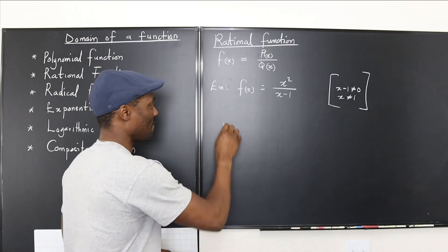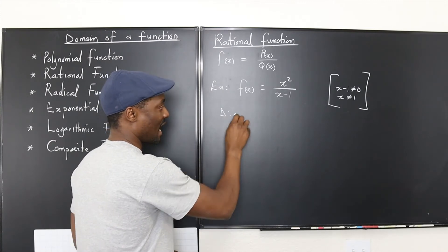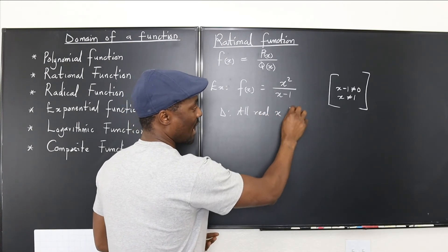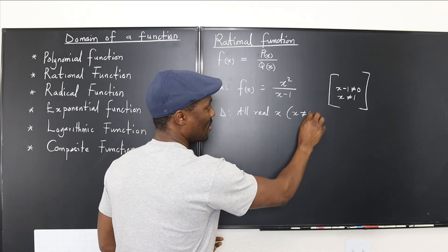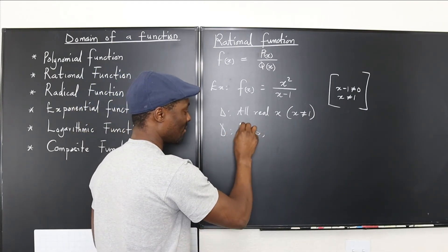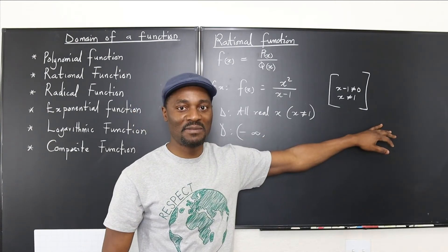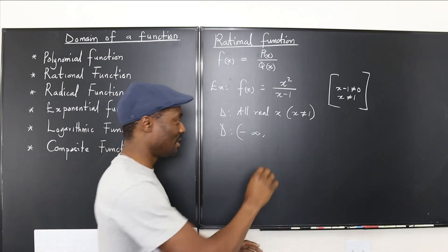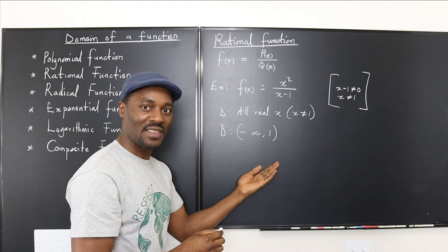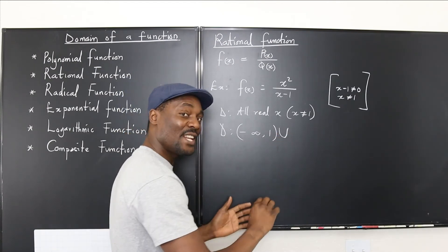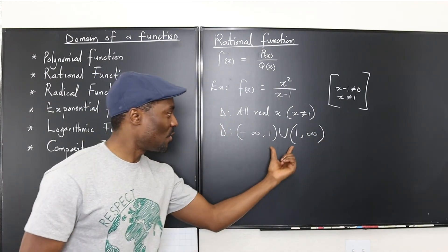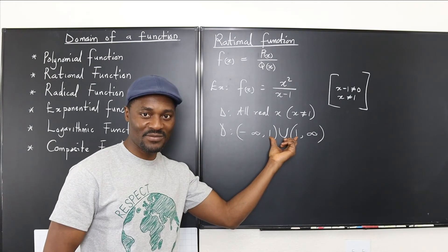So the domain of this function is all real x, but x cannot be equal to 1. You can also write it in interval notation: from negative infinity to just before 1 — using parentheses, then starting again just after 1 all the way to positive infinity. The value 1 is what you cannot have.